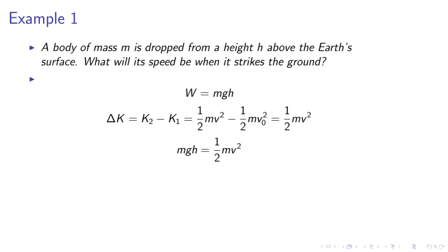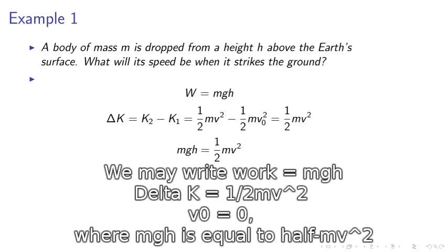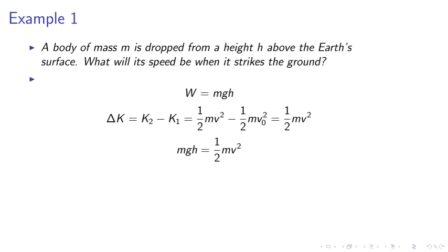I'm going to write work equals mgh. Delta K equals K2 minus K1 equals half m v squared minus half m v0 squared, equals half m v squared, where v0 is equal to zero. So mgh is equal to half m v squared.